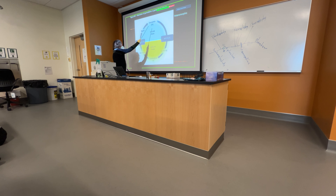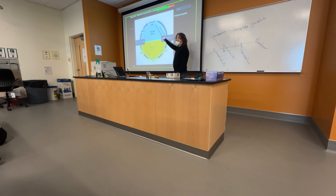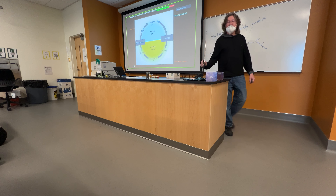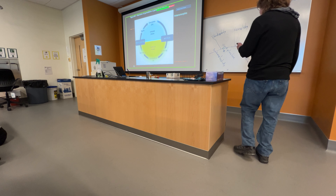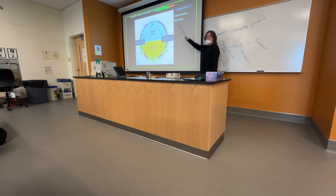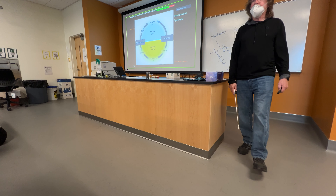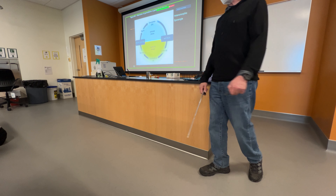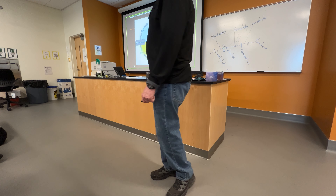We have two different adult forms: sporophytes and gametophytes. Sporophytes produce spores and they are diploid, producing spores by meiosis in a structure called a sporangium. Sporangia is plural, sporangium is singular. The sporangia produce spores; the spores are haploid. Spores will germinate and grow into a multicellular gametophyte that has a completely different body form compared to the sporophyte.